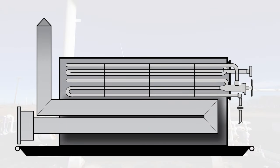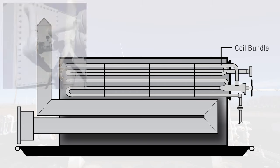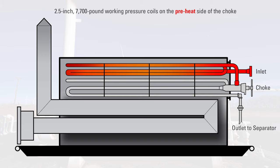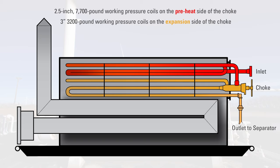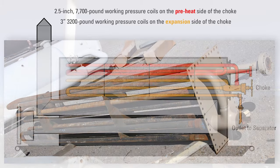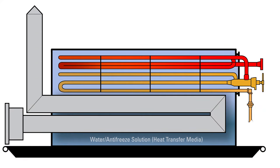The GPU has a coil made up of continuous passes of piping. The tag here tells us it's made up of two and a half inch, 7700 pound working pressure coils on the preheat side of the choke, and three inch, 3200 pound coils on the expansion side of the choke. These coils are immersed in a water antifreeze solution that acts as a heat transfer media, and that solution is heated by a fire tube contained in the heater section of the GPU.